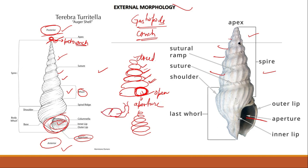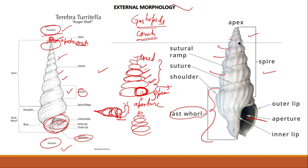In the last whorl, the animal resides. You might have seen a snail — the animal resides in the last whorl, where there is space. This last whorl where the animal resides is known as the body whorl. All the whorls except the last whorl constitute the spire of the shell.